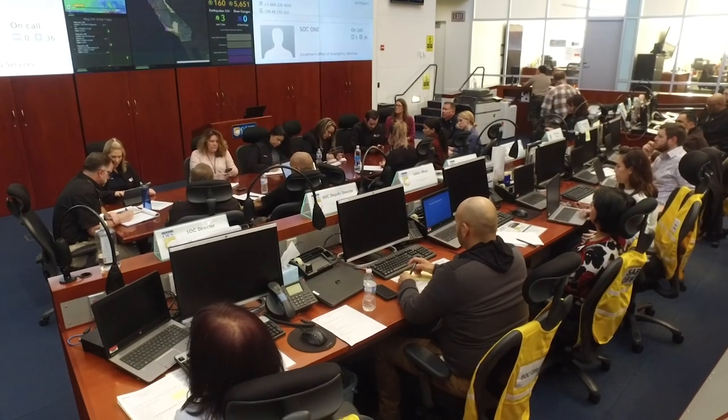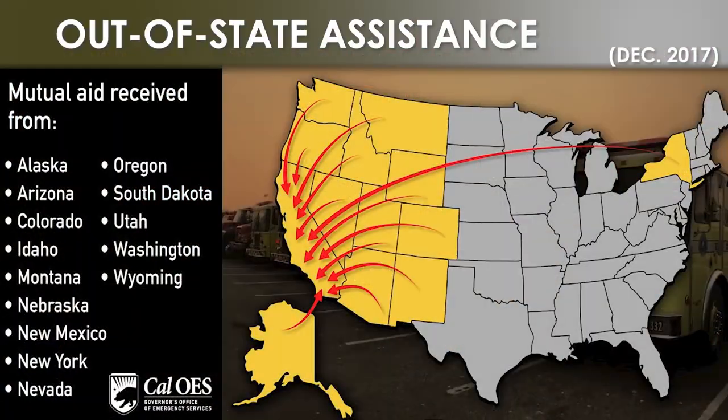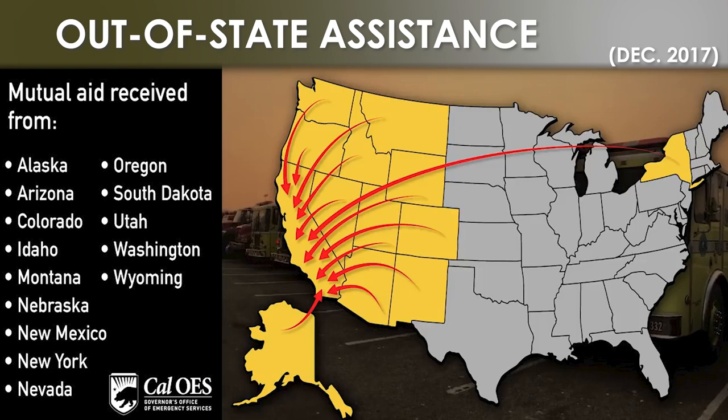Implemented on behalf of the governors by the emergency management agencies, the EMAC process is relatively straightforward. Once a state declares an emergency, a request for resources is initiated starting with the closest states. Mutual Aid resources are then mobilized and deployed to impacted areas starting with a 14-day deployment. Other states can reach out at any time so long as they have that proclamation.